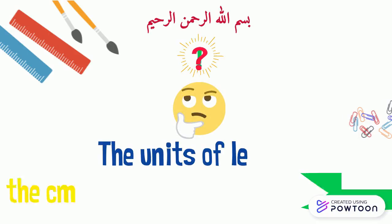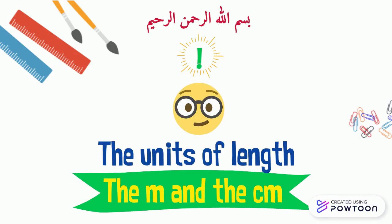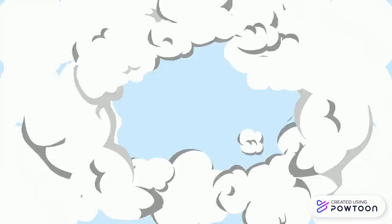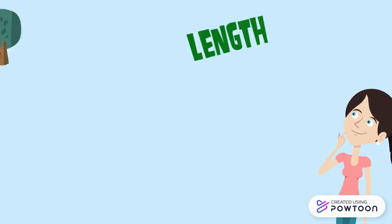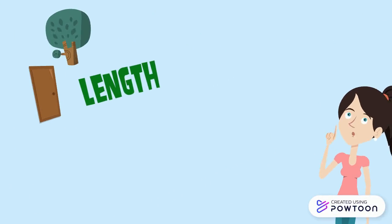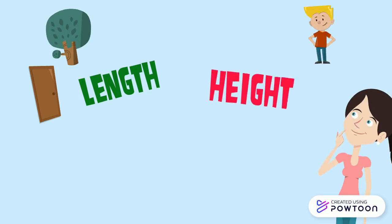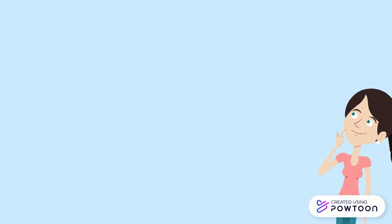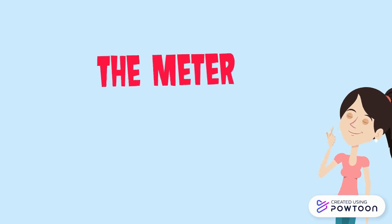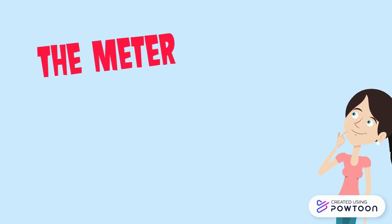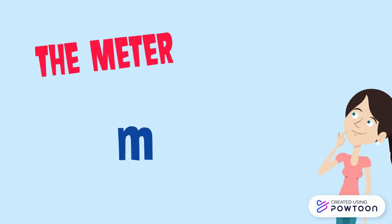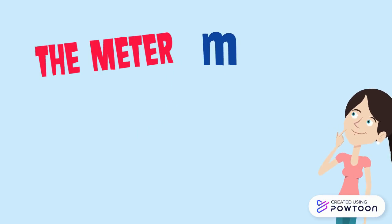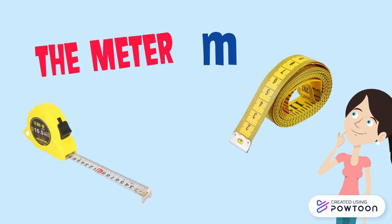The units of length: the meter and the centimeter. How can we know the length of several objects, the height of a child or the height of a house? To find out these lengths, we will use a unit of measurement called meter, and it is represented by the letter M. We will use it to measure length.